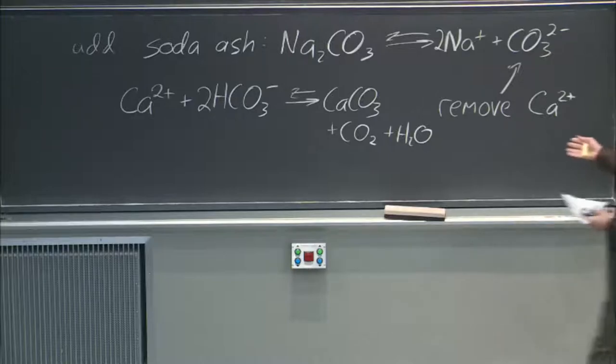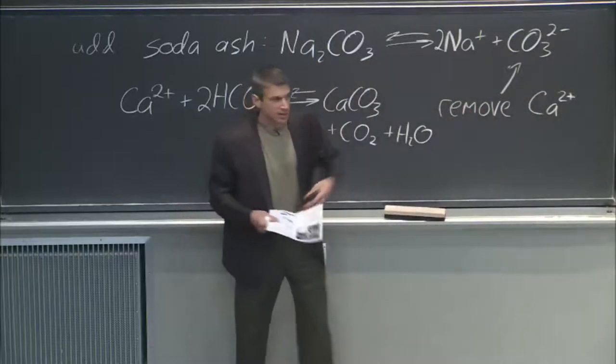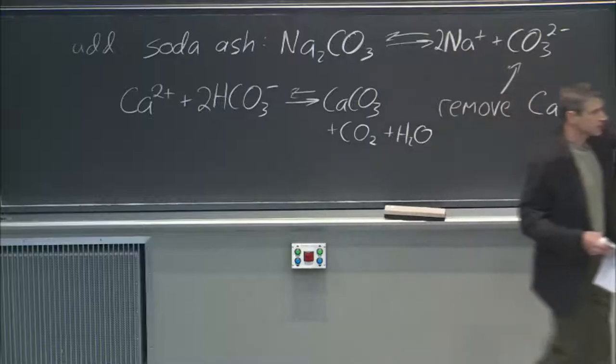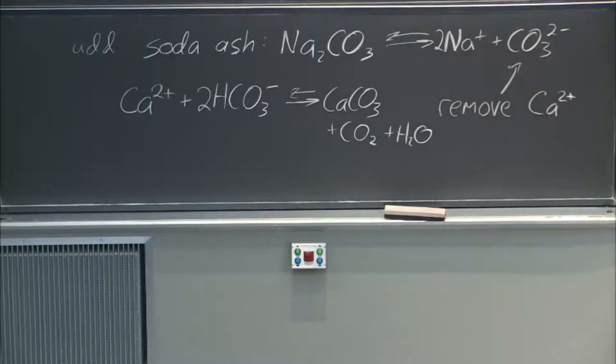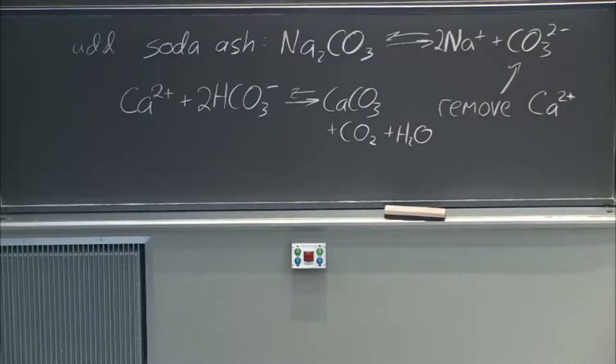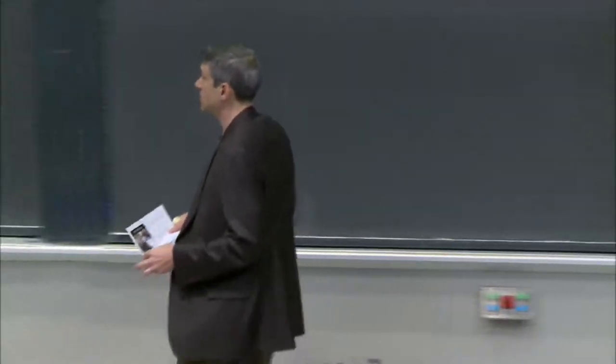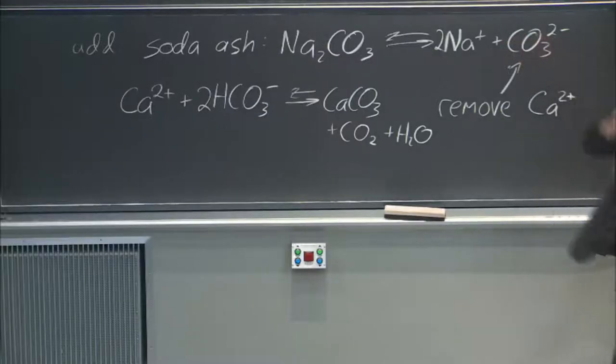Well, you can add lime, which gives me a source of OH minus, and that takes out the magnesium, right? And these are ways to change the chemistry of water so that you don't have as many ions, these calcium and magnesium ions floating around that cause problems.